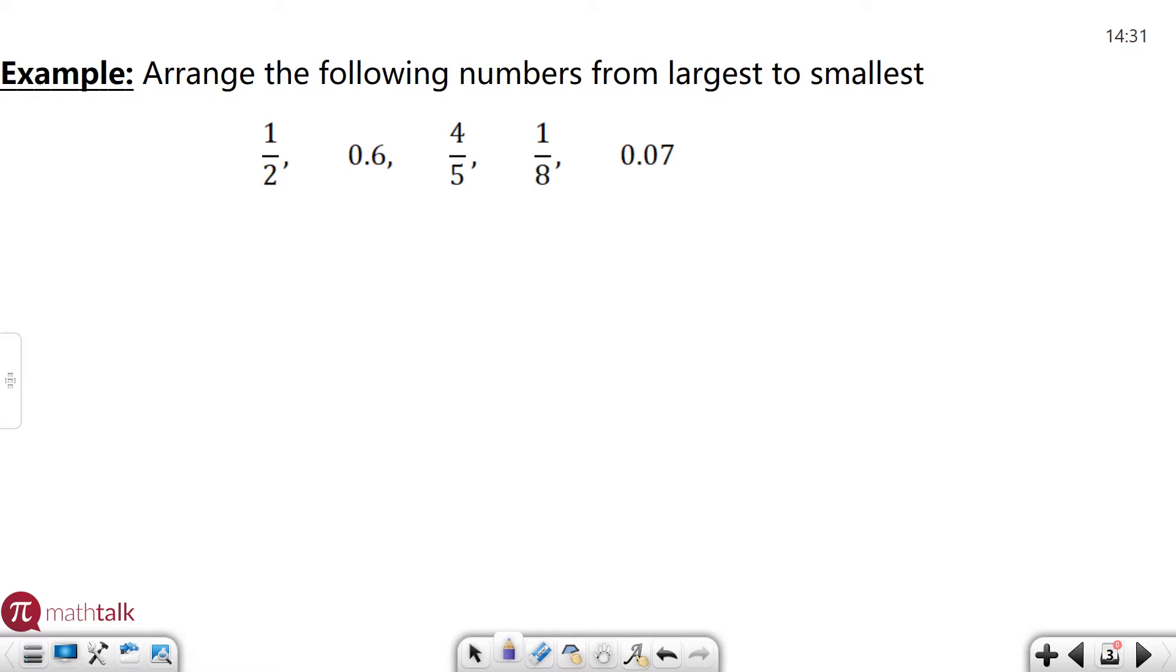So a half, I told you, was 0.5. You have 0.6 which is already a decimal. Four-fifths—remember one-fifth is 0.2—so four-fifths is four times 0.2 or 0.8. One-eighth I told you was 0.125, and then you have 0.07.